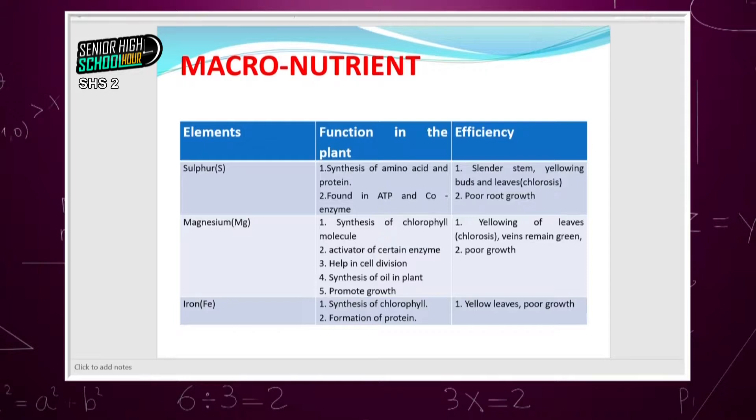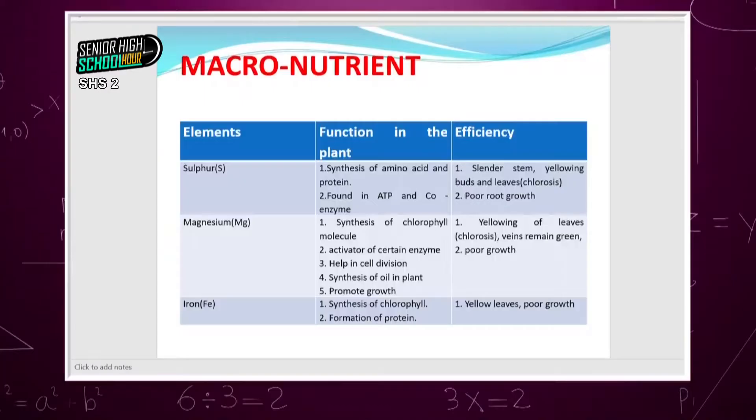Magnesium is a key component of chlorophyll — the compound that traps light to make photosynthesis possible. It is also involved in cell division and activating some enzymes. Plants need magnesium every day since they perform photosynthesis daily. Without it, photosynthesis fails and a yellowing called chlorosis spreads on the leaf, especially on the veins where water is transported.